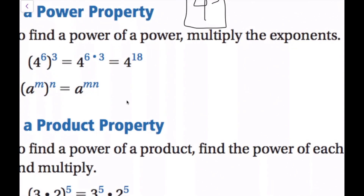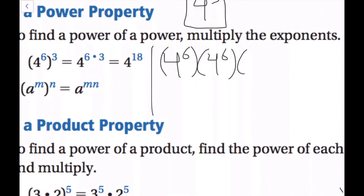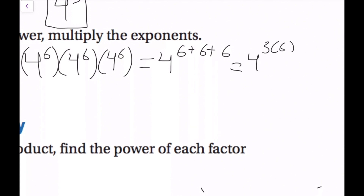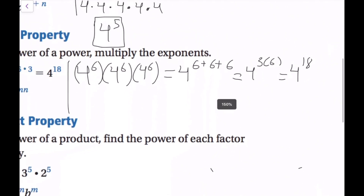Let's see why that works. We can rewrite four to the sixth power to the third power as four to the sixth times four to the sixth times four to the sixth. Using the product of powers property, we add the exponents: four to the sixth plus six plus six. Since that's repeated addition, it becomes four to the three times six, which equals four to the eighteenth power.